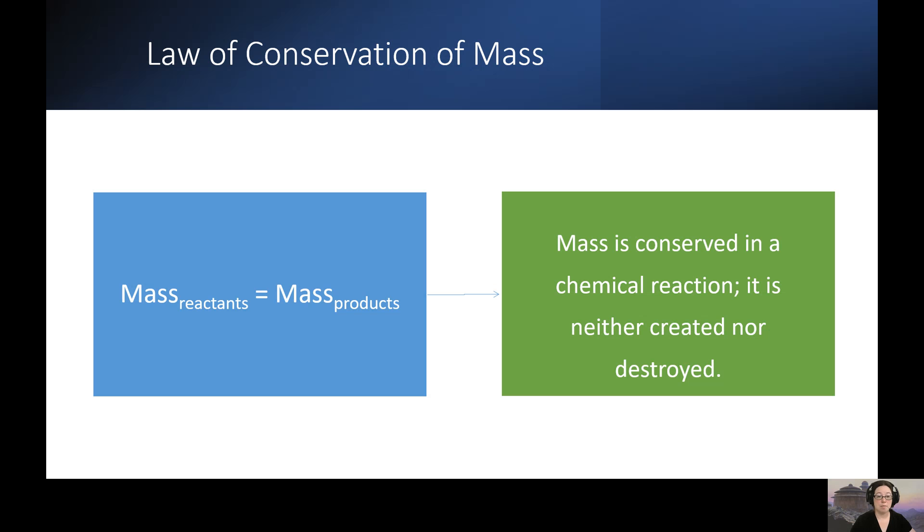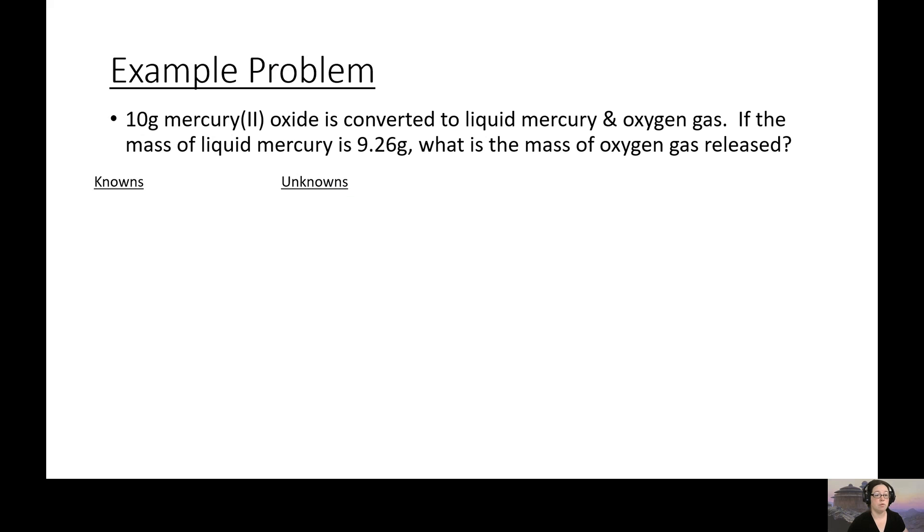So I'm going to give you an example of the law of conservation of mass. For example, if you have 10 grams of mercury(II) oxide, and it's converted to liquid mercury and oxygen by heating it up. If the mass of the liquid mercury is 9.26 grams, what is the mass of the oxygen that's released? So let's take a look at this.